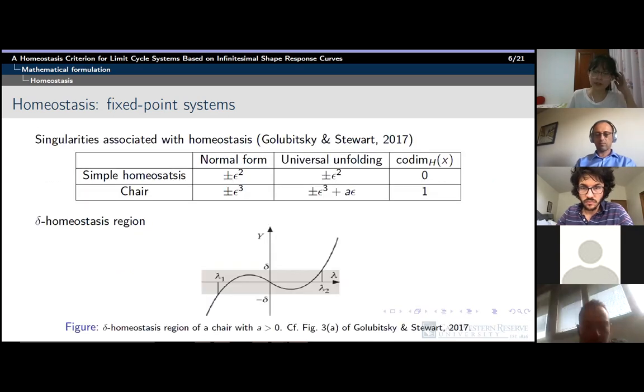Cusp points are defined to have vanishing first order derivatives and non-vanishing third order derivative, like the cubic function in the example of the body temperature versus environmental temperature. So higher order zero derivatives give more robust form of homeostasis. Such a mathematical reformulation of homeostasis allows them to use the normal form theory to discuss the universal unfoldings of the singularities associated with the homeostasis. The simple homeostasis points require no unfolding parameter, while cusp points require one extra parameter. Such transformation of homeostasis points to a normal form representation allows them to introduce the notion of a delta homeostasis region.